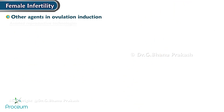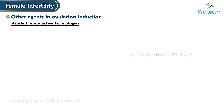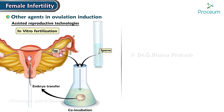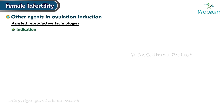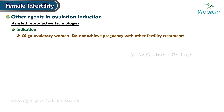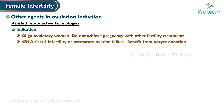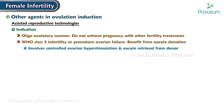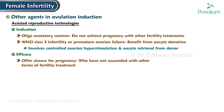Finally, we'll cover assisted reproductive technologies. Techniques include in vitro fertilization and oocyte donation. Indication: These technologies are considered for oligo-ovulatory individuals who do not achieve pregnancy with other fertility treatments. Patients with WHO Class III infertility or premature ovarian failure may benefit from oocyte donation, which involves controlled ovarian hyperstimulation and oocyte retrieval from a donor. Efficacy: Assisted reproductive technologies offer a chance for pregnancy to people who have not succeeded with other forms of fertility treatment, although it comes with its own set of challenges and considerations.